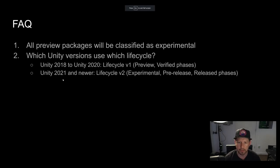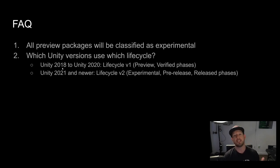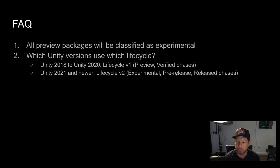All preview packages will be classified as experimental and won't be shown unless you enable it. You can't install them from the Package Manager unless you go to the website I showed. For Unity 2018 or 2020, lifecycle v1 categorizes packages as preview or verified. For Unity 2021 or newer, lifecycle v2 categorizes them as experimental, pre-release, or release. Experimental packages must be manually installed; pre-release packages are discoverable by enabling a setting in Advanced Settings.